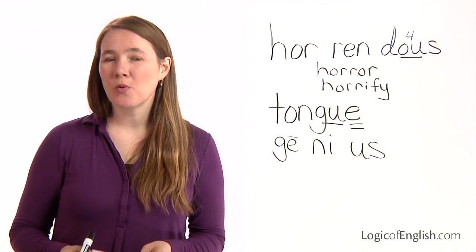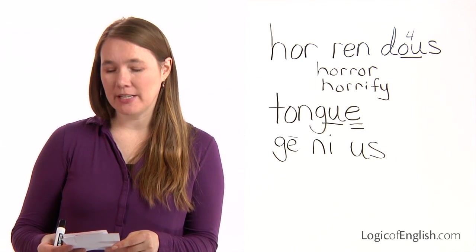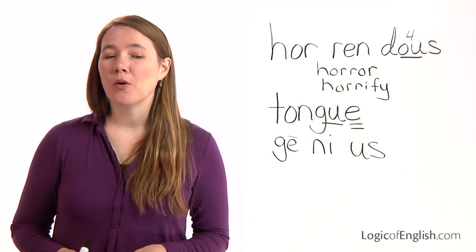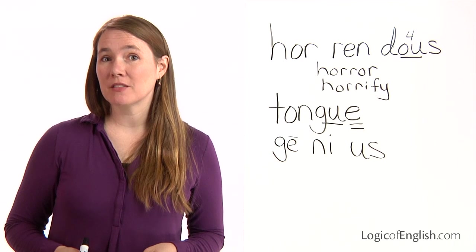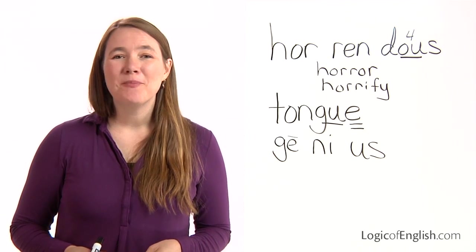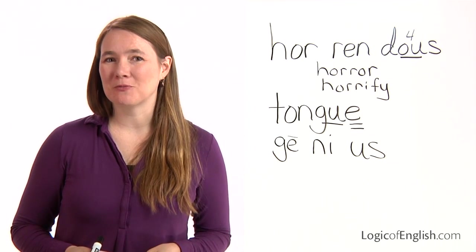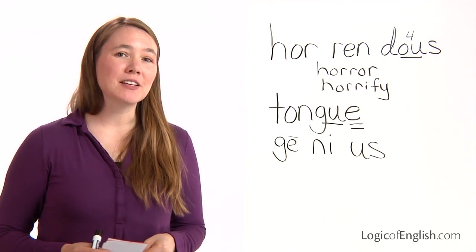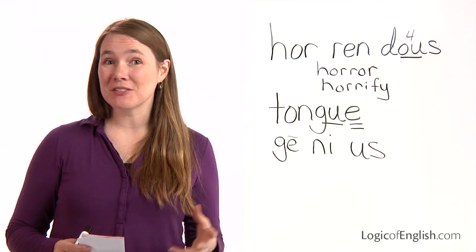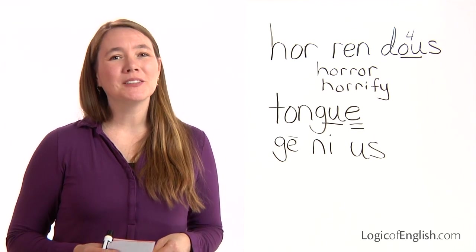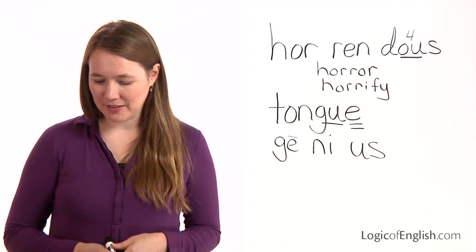The next word is quidditch. Quidditch was submitted by Anjali, Autumn, and Emily. Quidditch is a word that JK Rowling made up as a sport found in the Harry Potter books. By the way, JK Rowling's books are filled with outstanding examples of roots. If you begin to understand roots in English, you'll really have an appreciation for some of the characters and names in her books. But let's look at the spelling of quidditch, because she followed the rules in the phonograms perfectly.